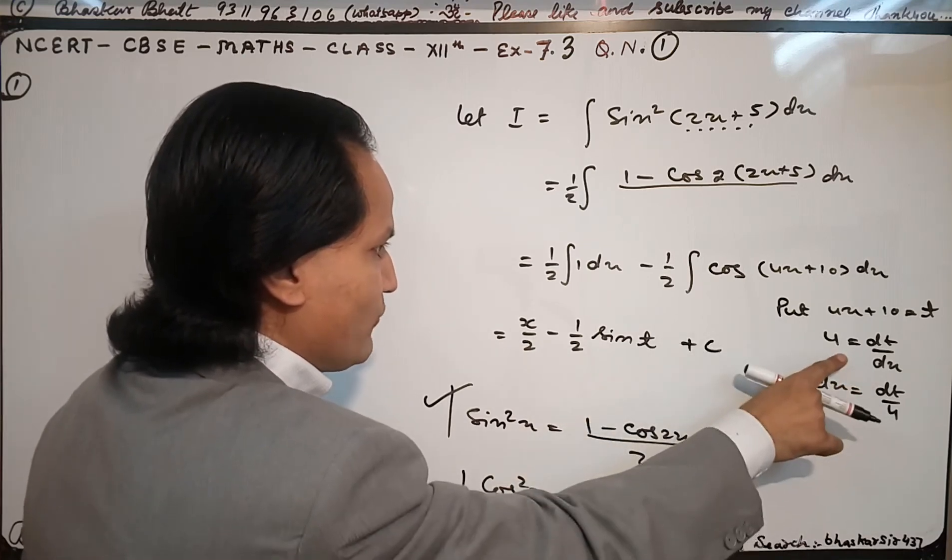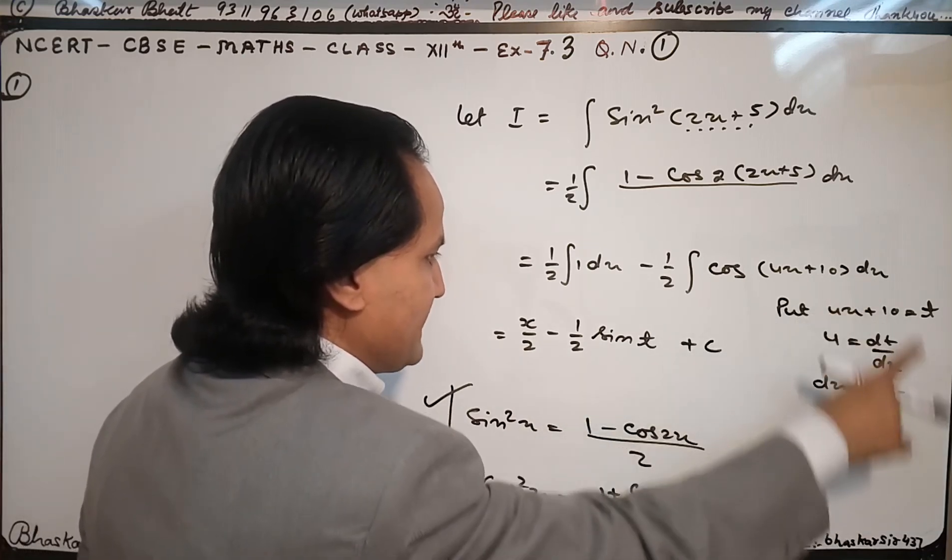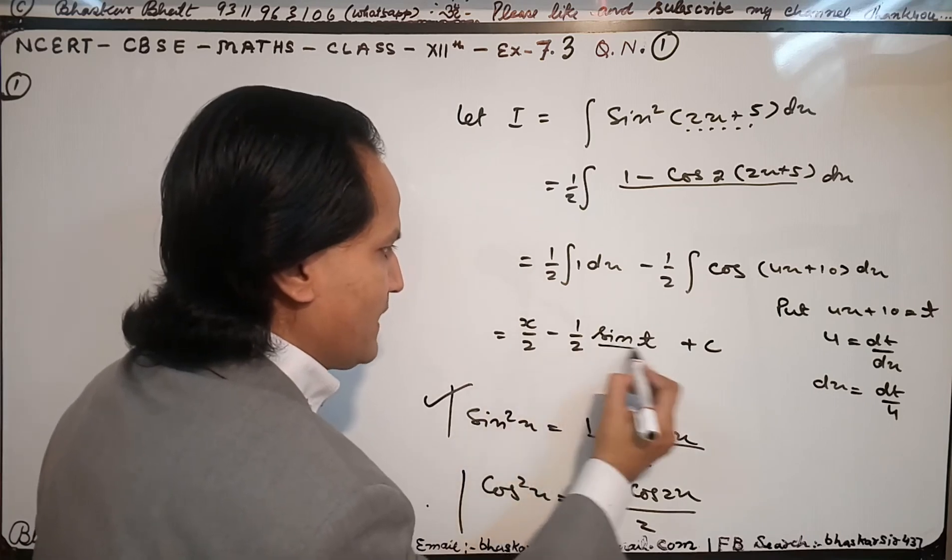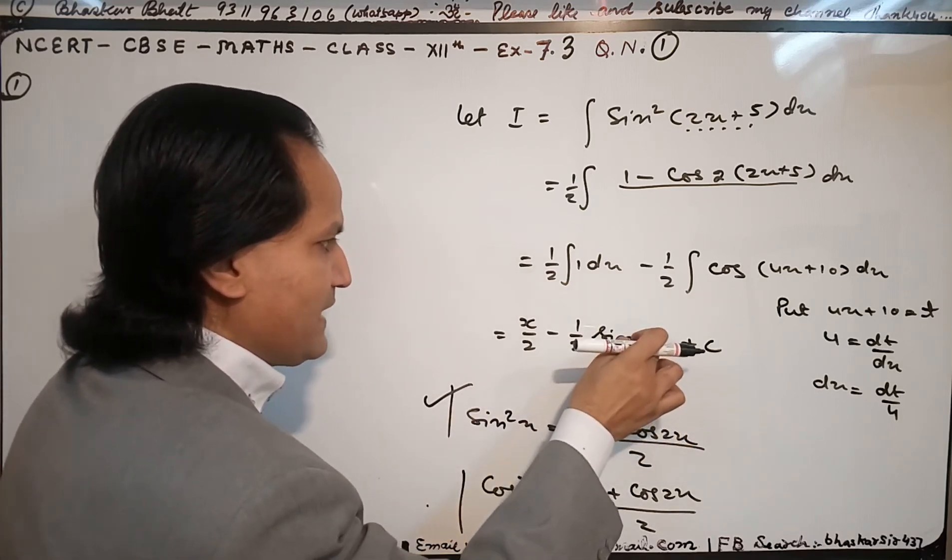We have 1/2, and when you integrate 1, you get x. Change dx to dt/4. And t is equal to 4x + 10.